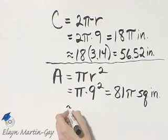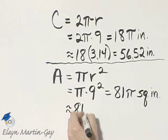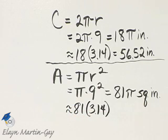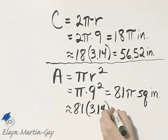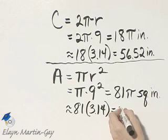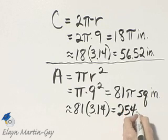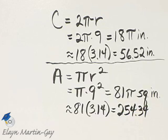What is it approximately? We'll do the same thing. Instead of pi, we'll replace pi with an approximation, 3 and 14 hundredths. And then once we multiply, we have 254 and 34 hundredths. And this is square inches.